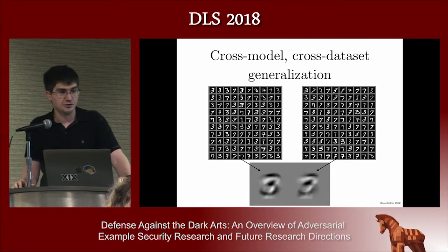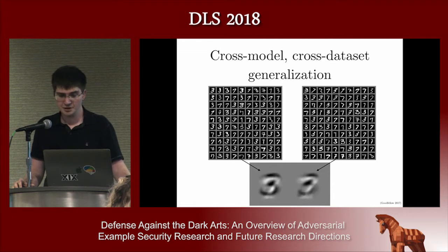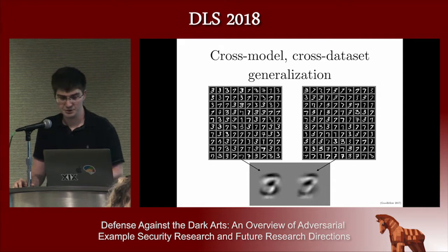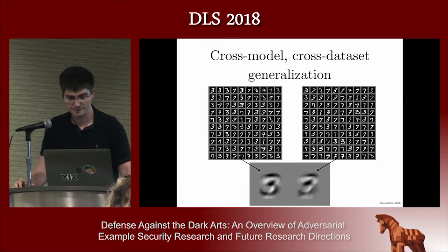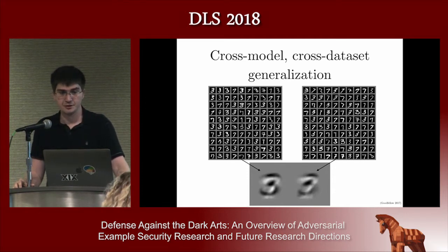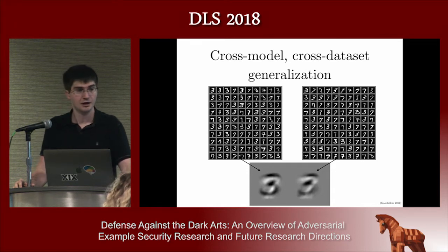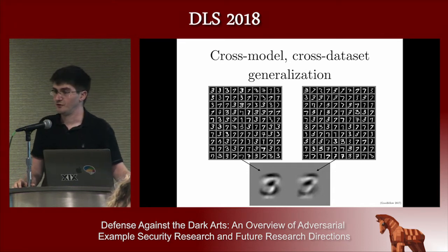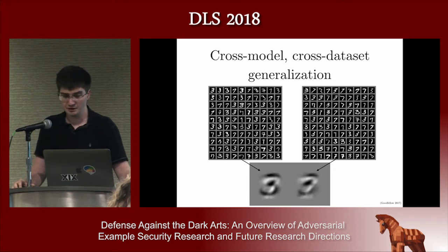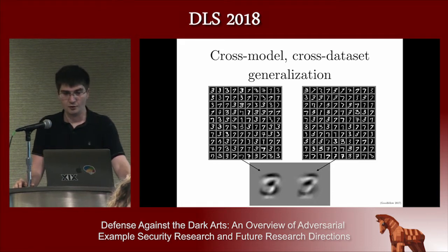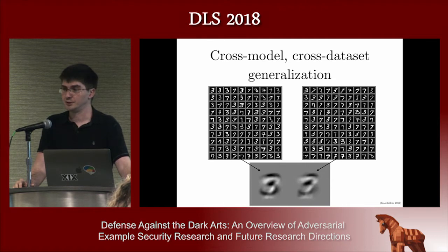I show the weight vectors in the bottom row of the slide. Wherever you see white pixels, those vote for the input being a seven; black pixels vote for a three. The two different logistic regression models trained on different data have learned more or less the same weight vectors — they both look like an image of a seven with a three subtracted off. Because these two algorithms learn more or less the same weights, they're vulnerable to the same attacks. An attacker can fool a model they don't have access to by exploiting this transfer property.